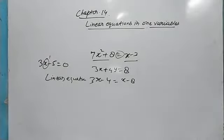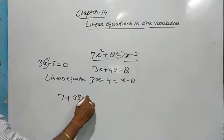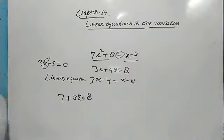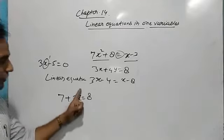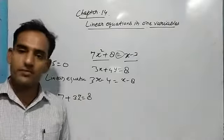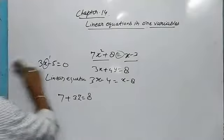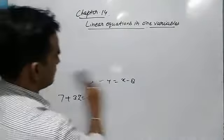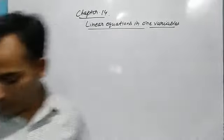One more example: 7 + 3z = 8. The variable is z and the power of z is 1, so the maximum power is 1. We have to solve these types of equations. The chapter's name is linear equations in one variable.